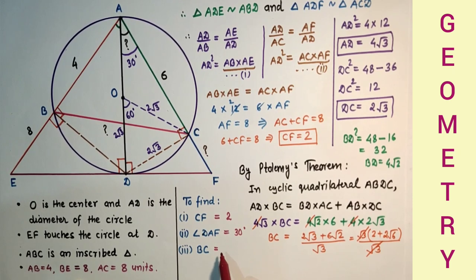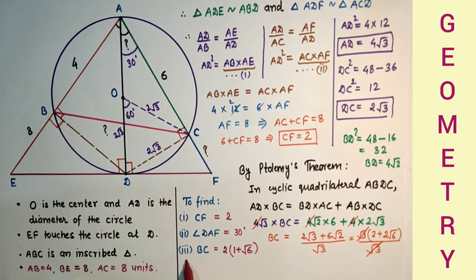Therefore BC is equal to 2(1 + √6), and this is the answer.